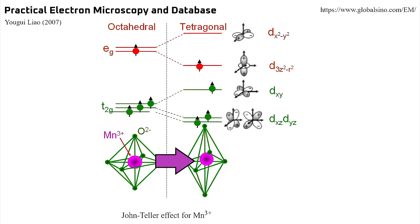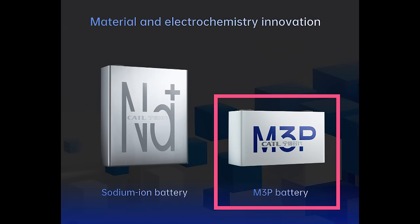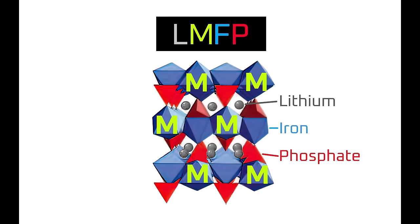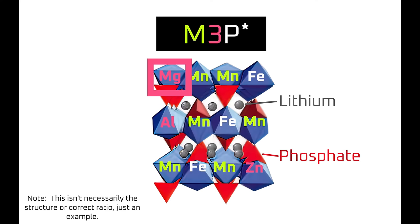Now that we know how manganese causes Jahn-Teller effects and dissolution issues in LMFP cathodes, what are the engineering solutions? This brings us to CATL's M3P chemistry. Reporting out of China suggests that besides being an LMFP chemistry, CATL's M3P chemistry replaces some of the iron or manganese with magnesium, aluminum, and zinc. Those elements are often used to stabilize cathodes and improve cycling performance. I'm going to focus on magnesium, as aluminum and zinc may do a better job of reducing Jahn-Teller effects but magnesium has more available research.